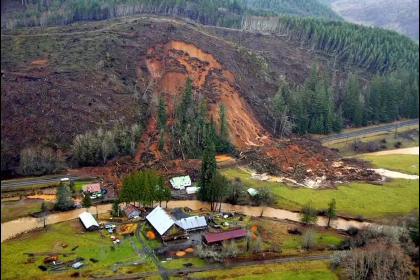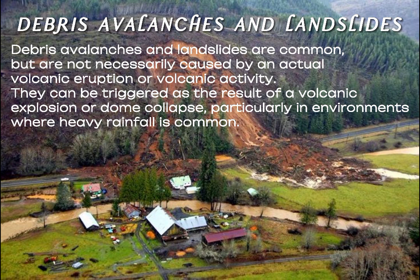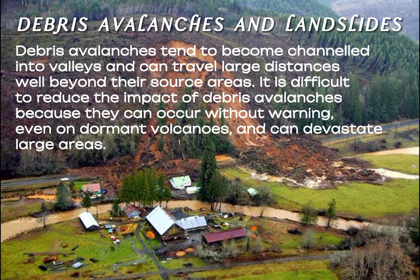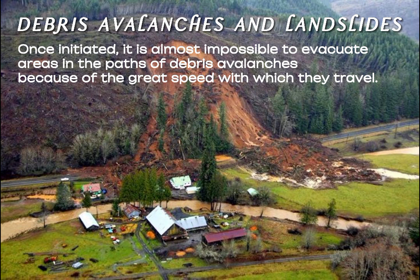Debris avalanches and landslides are common, but are not necessarily caused by an actual volcanic eruption or volcanic activity. They can be triggered as a result of a volcanic explosion or dome collapse, particularly in environments where heavy rainfall is common. Debris avalanches tend to become channeled into valleys and can travel large distances well beyond their source areas. It is difficult to reduce their impact because they can occur without warning, even on dormant volcanoes, and can devastate large areas. Once initiated, it is almost impossible to evacuate areas in their path because of the great speed with which they travel.